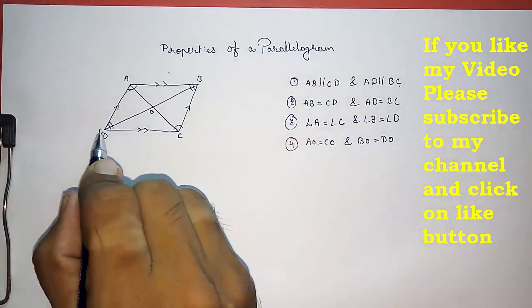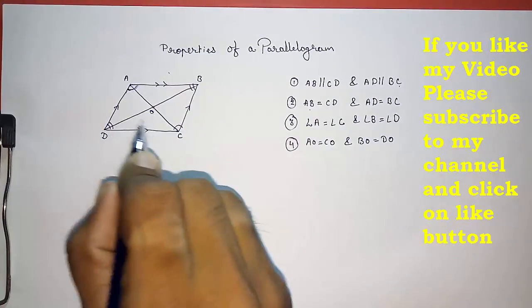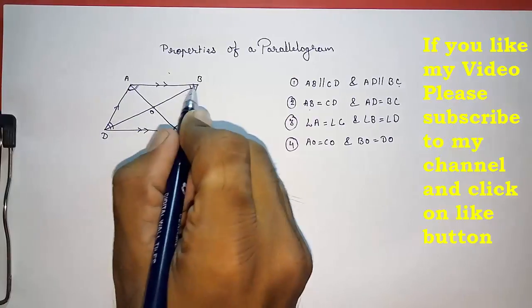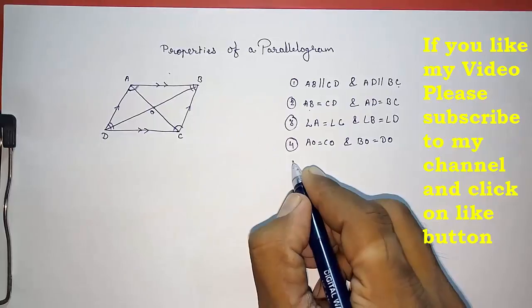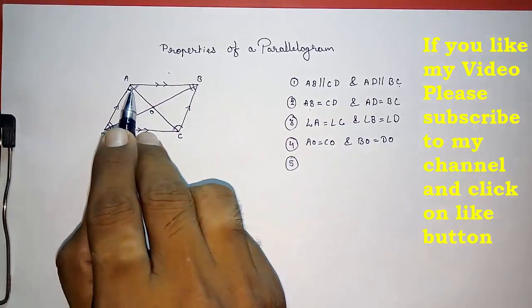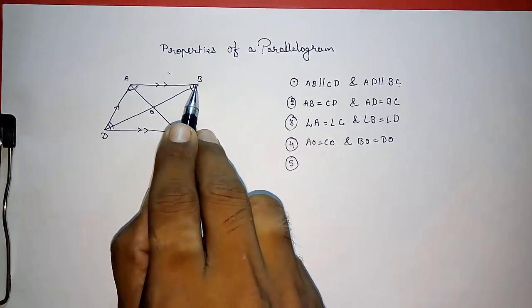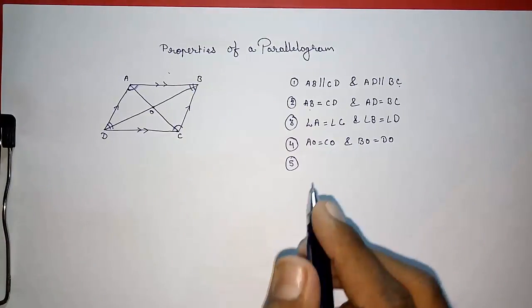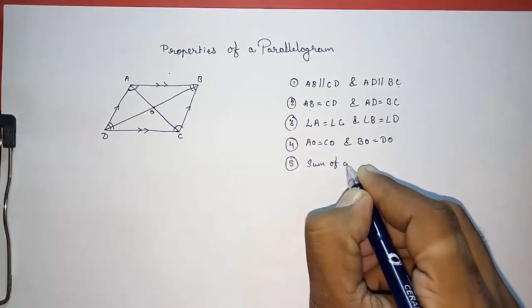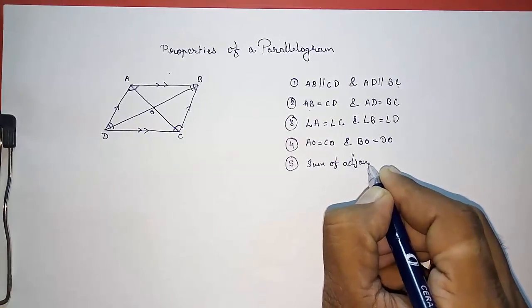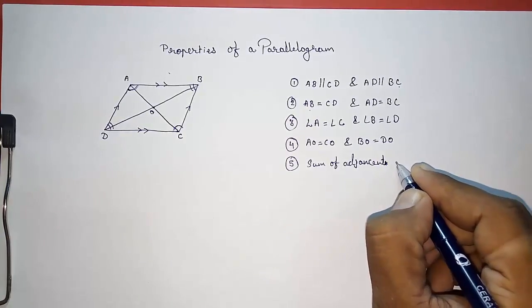Now, about the adjacent angles. We know angle A equals angle C, but what about the adjacent or consecutive angles? The sum of adjacent angles - A plus B, or A plus D, or D plus C, or C plus B - will always be 180 degrees. So the sum of adjacent angles...